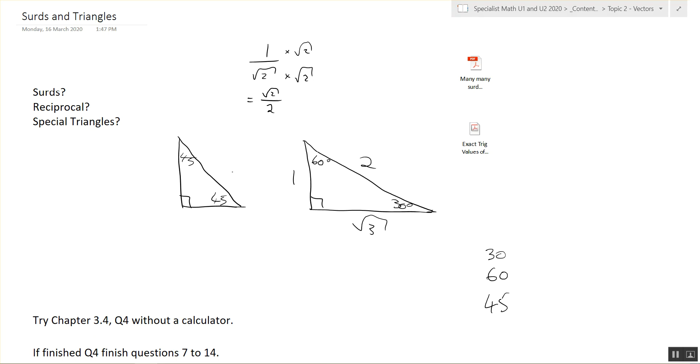It was about 45 degrees. Yeah, 45 plus 45 plus 90 is 180. Very good. And what are the sides? Like 1, 1 and something else. 1, 1 and square root 2.